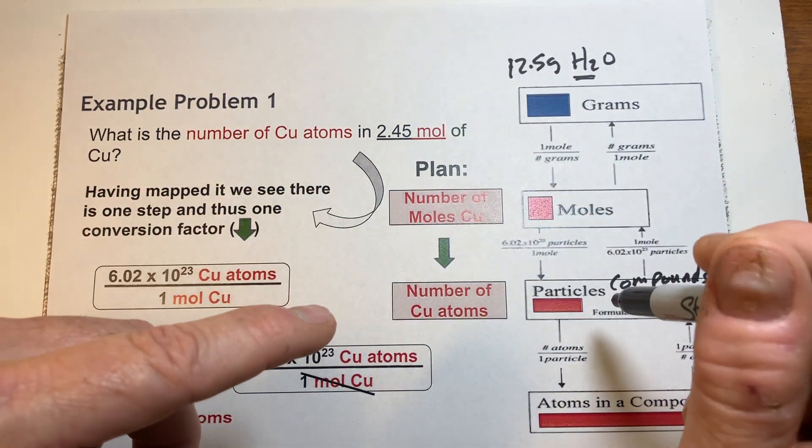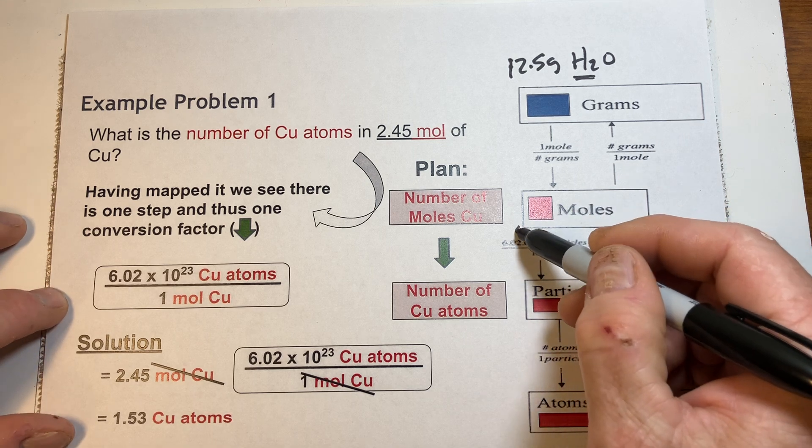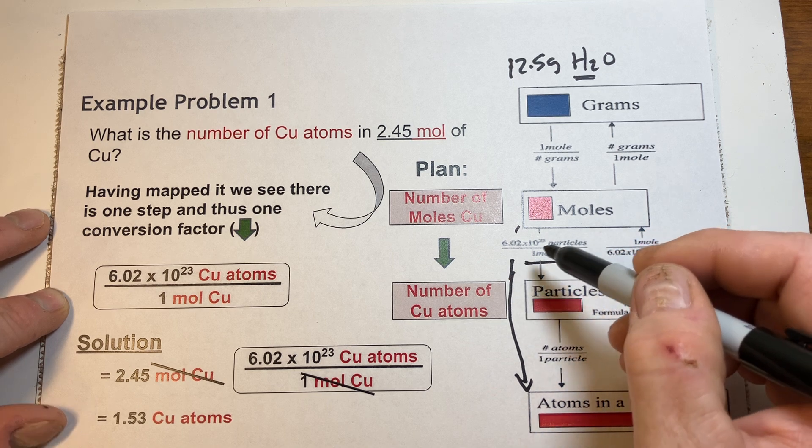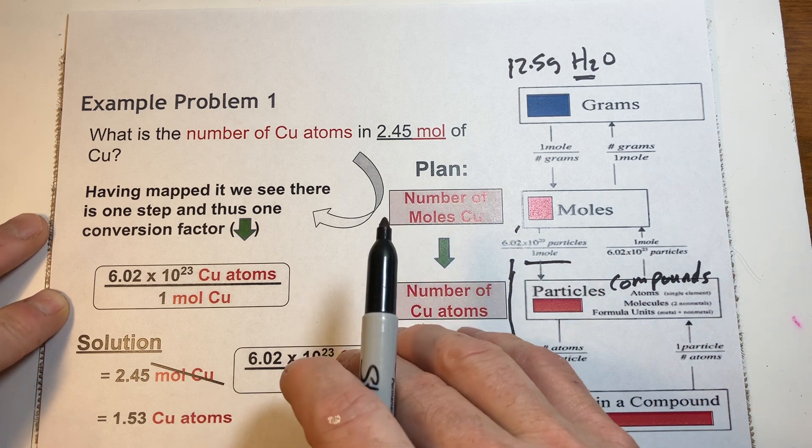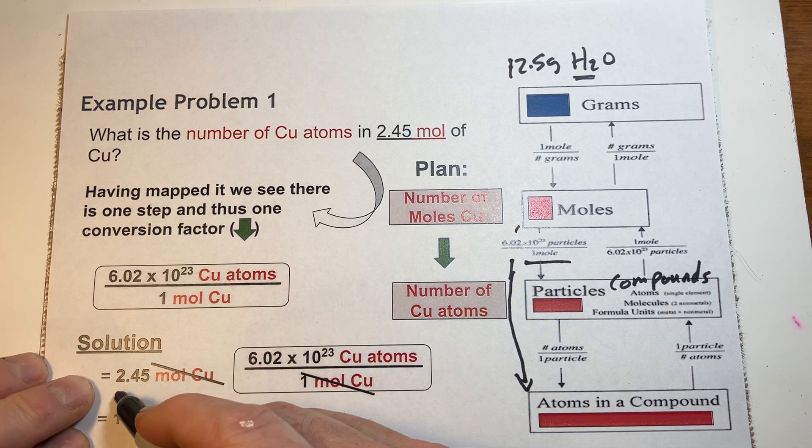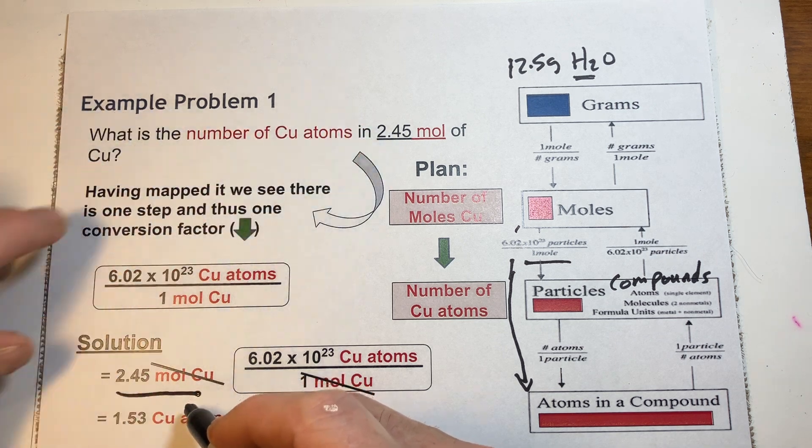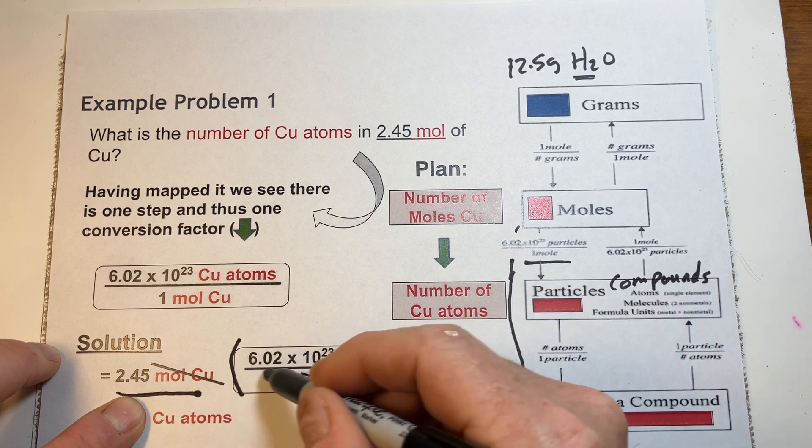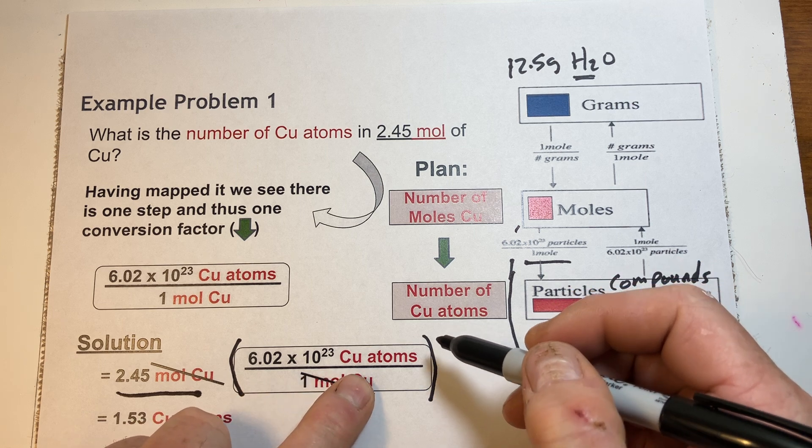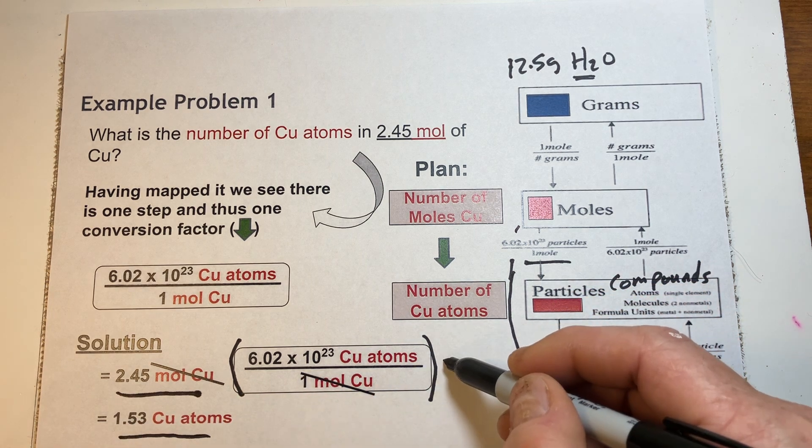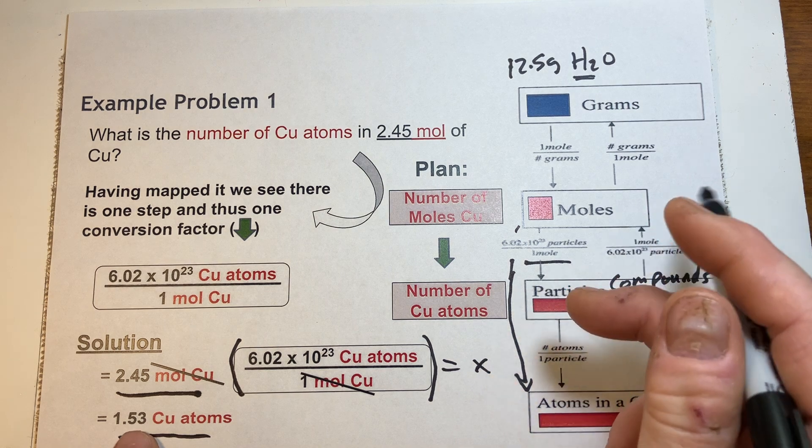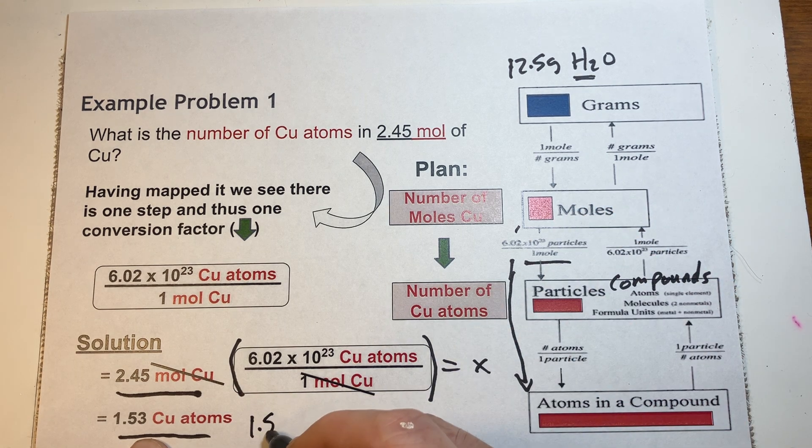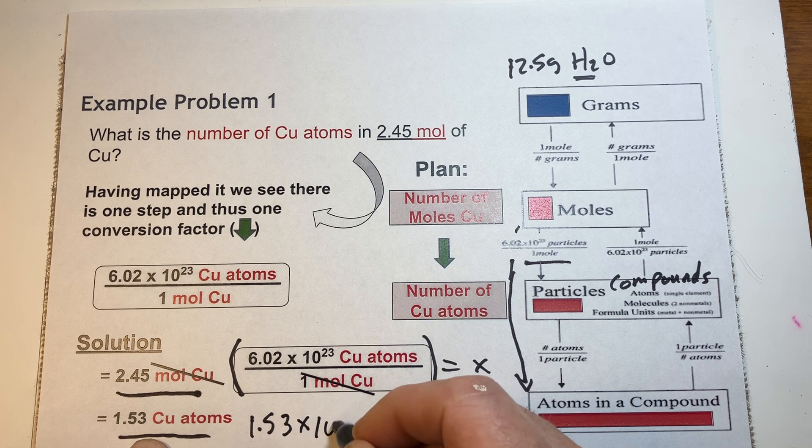If we have a compound, we'll have to maybe stop at this step, particles, but we're just going from moles right to number of atoms. And to do that, all we have to do is multiply by this 6.02 times 10 to the 23rd. So, let's set it up in a dimensional analysis approach. We have our 2.45 moles of copper. I need to convert that to number of copper atoms. So, I put a conversion. So, we write out our 6.02 times 10 to the 23rd above the 1 mole. And we would have our final answer for X, which would be 1.53 times 10 to the 23rd.